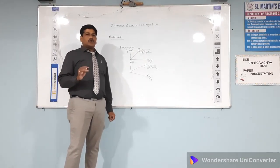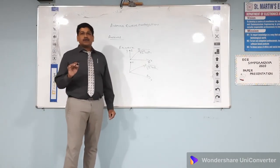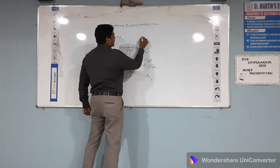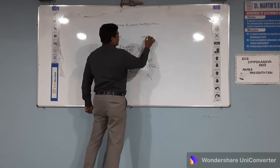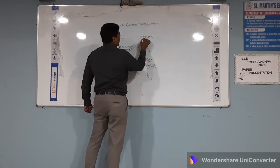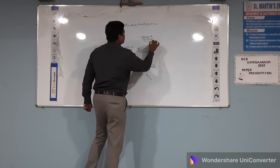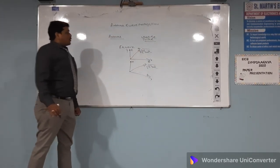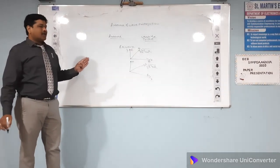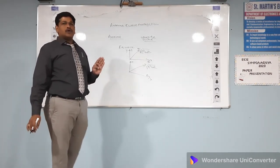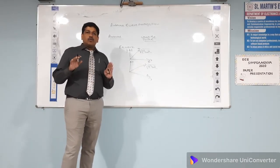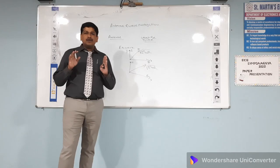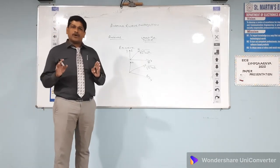These electromagnetic waves are made to propagate into a particular medium like a waveguide or a transmission line. These electromagnetic waves will exhibit different types of properties — they will propagate only when there is an acceleration inside the particular medium through which they are getting propagated.